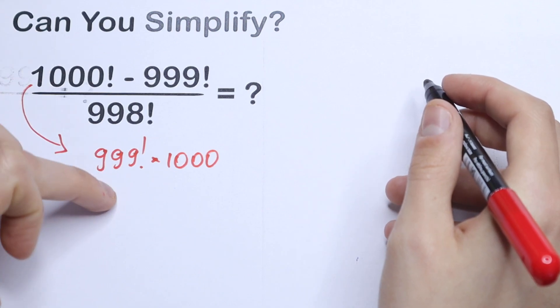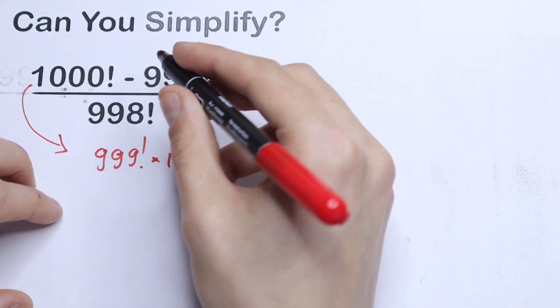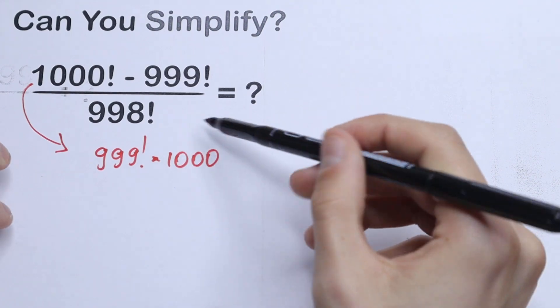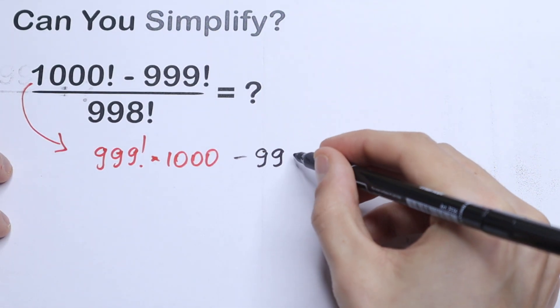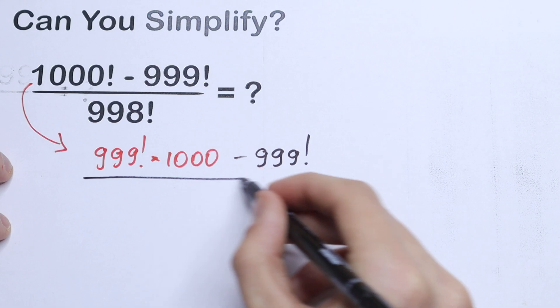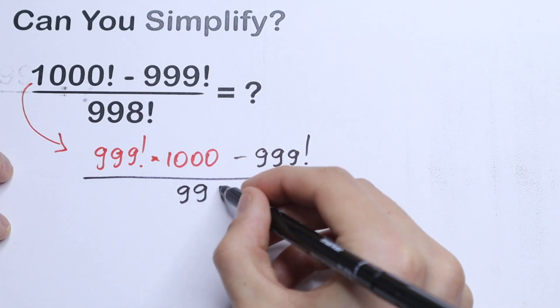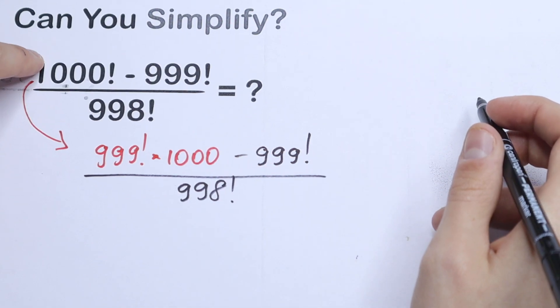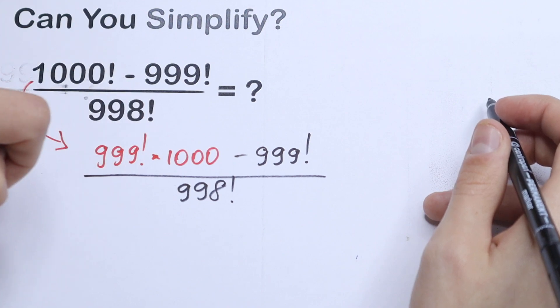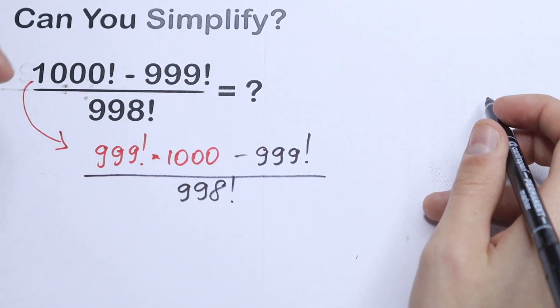So this will be the same as right here. And let's write this 999 factorial the same, minus 999 factorial, all over 998 factorial. So we just write this 1000! as 999! times 1000.